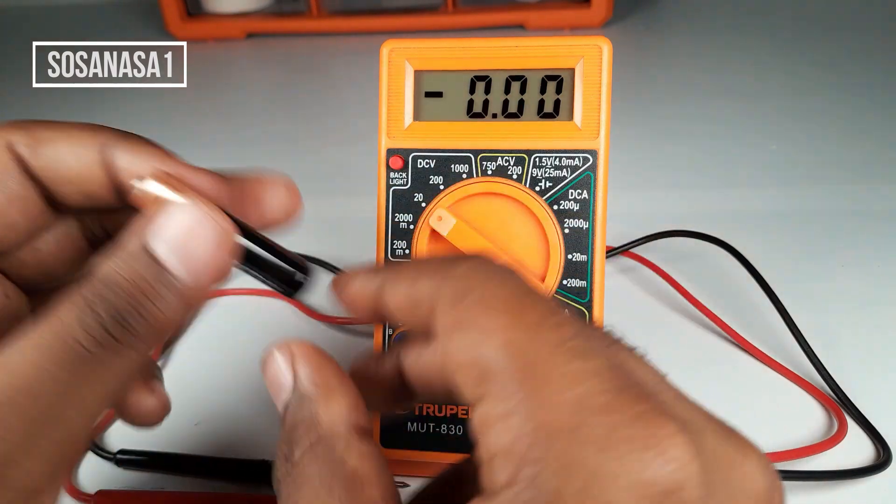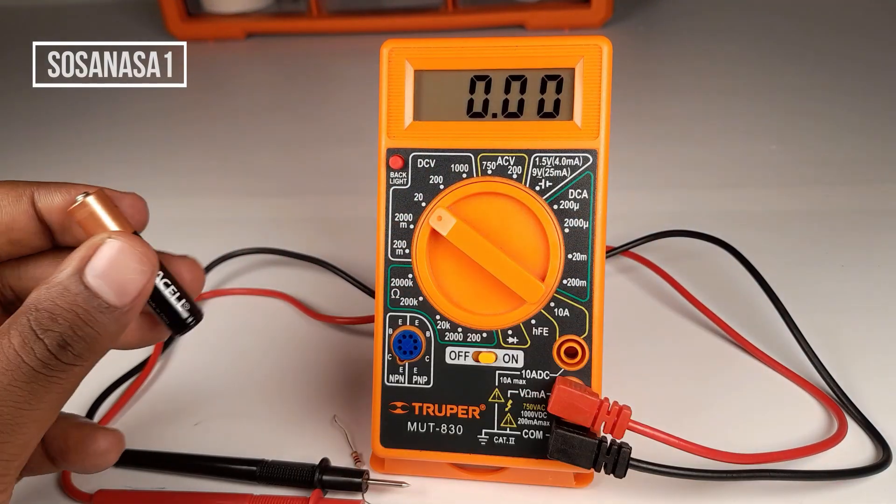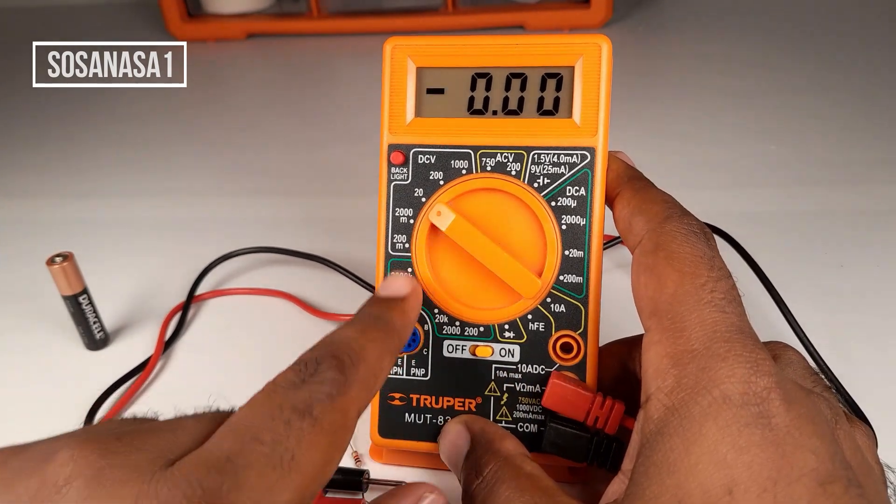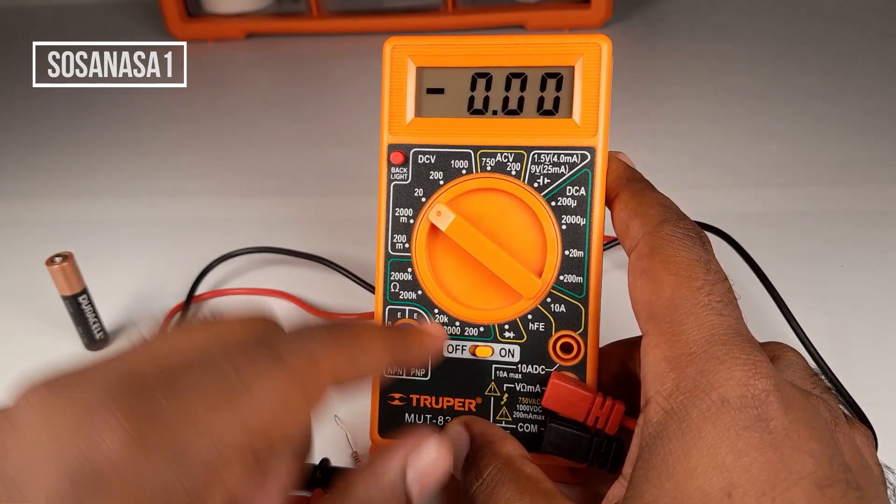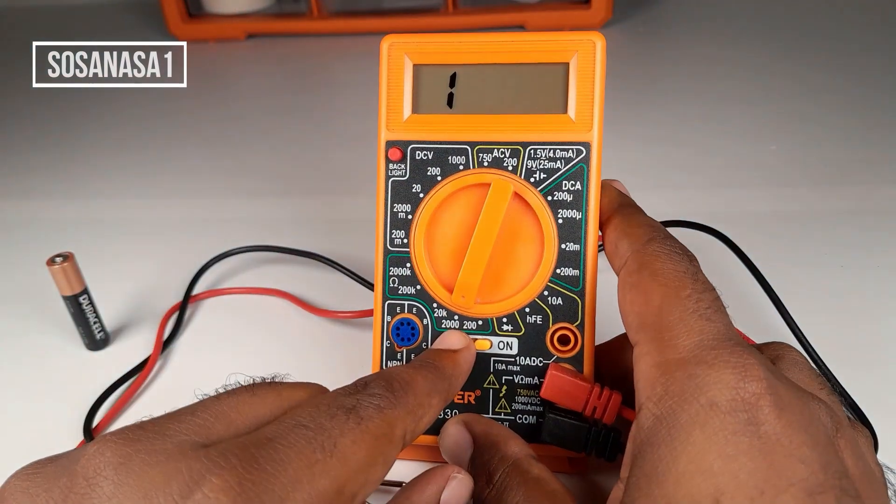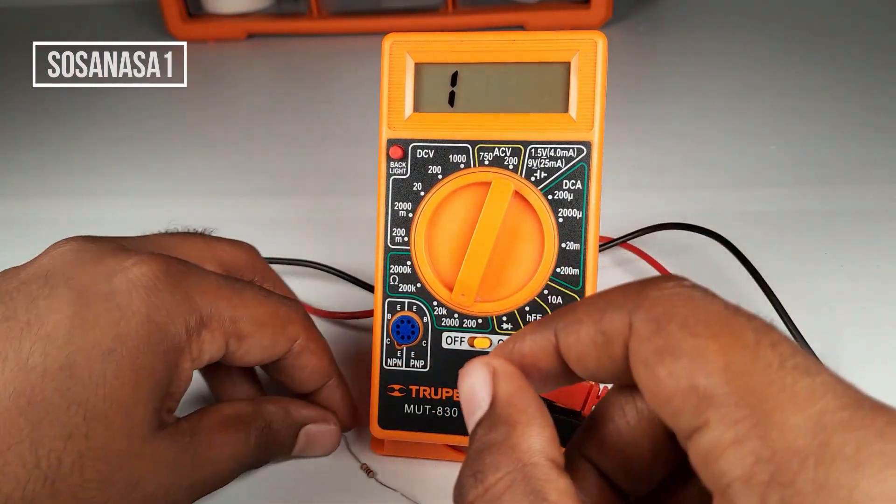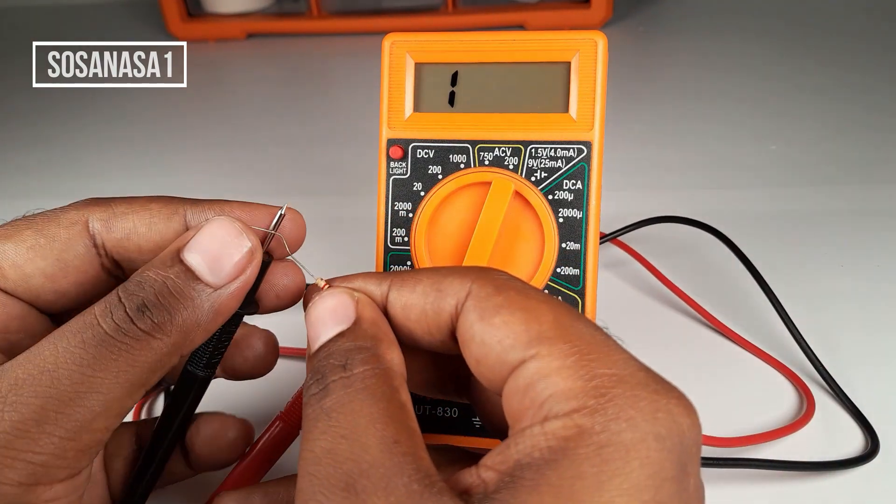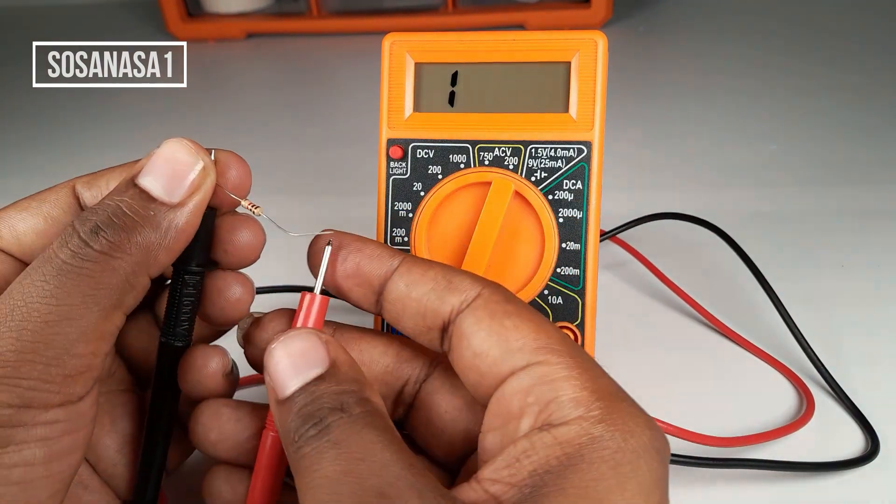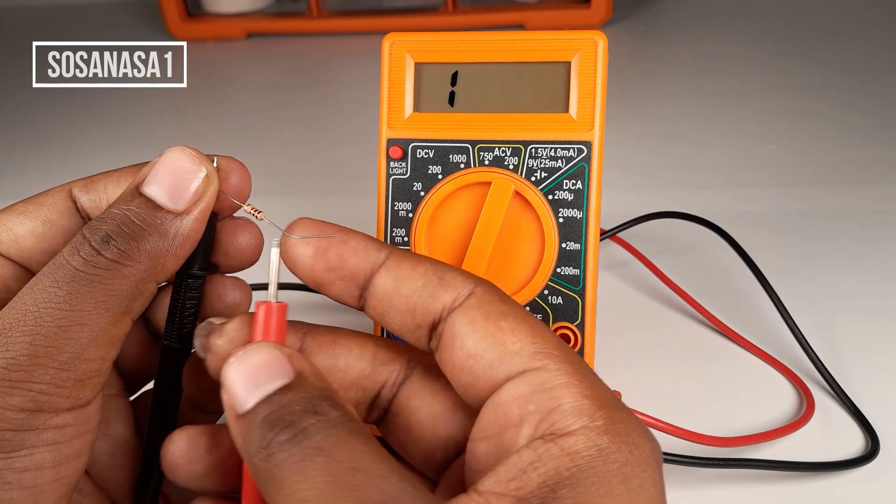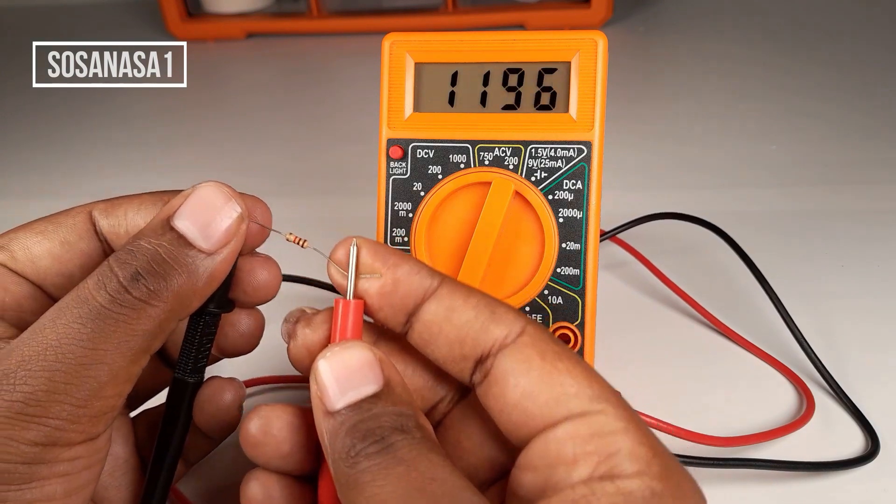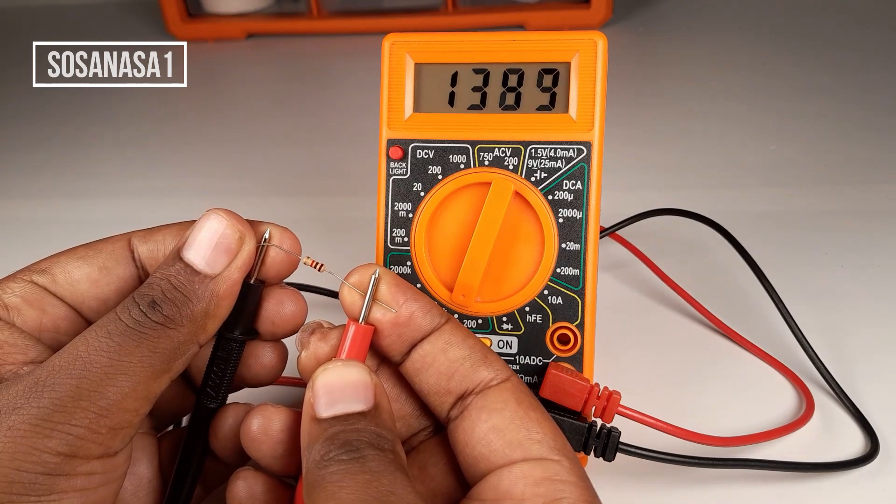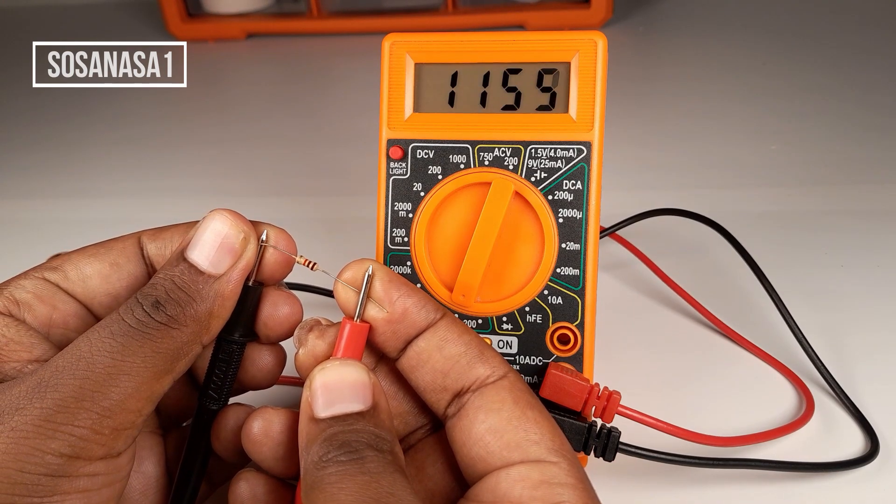In this case, this battery is good. Now let's move this selector to electric resistance and choose 2000 ohms. Take the electric resistance and touch one side at this point and touch this point. Watch on the multimeter screen. In this case, this electric resistance has 1150 ohms.